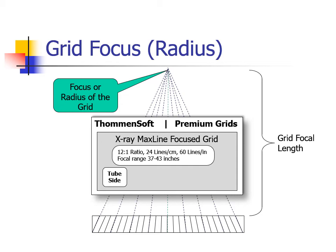Note that this grid has a tube side, and if the grid is incorrectly positioned with this side away from the tube, an extreme amount of grid cutoff will occur.